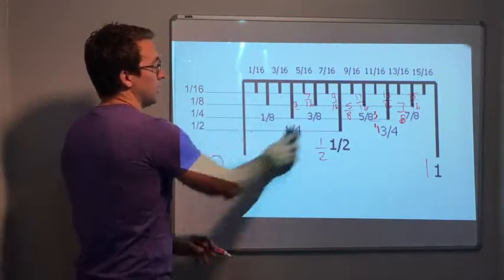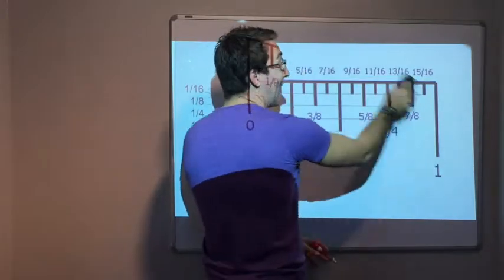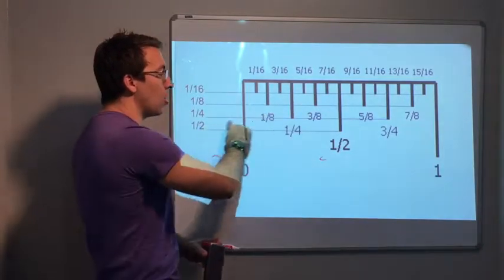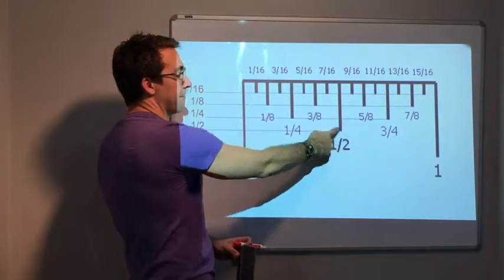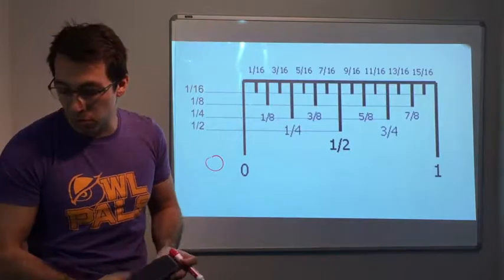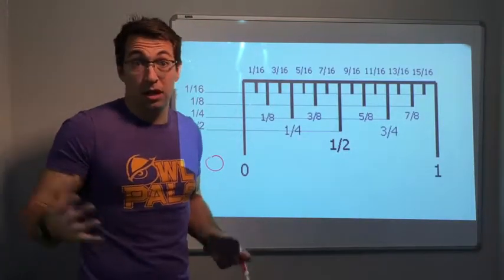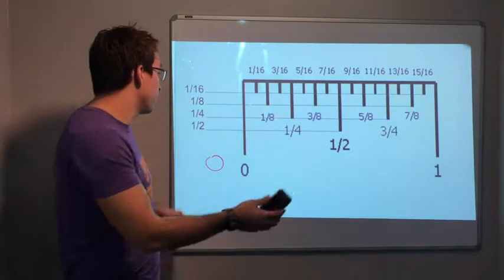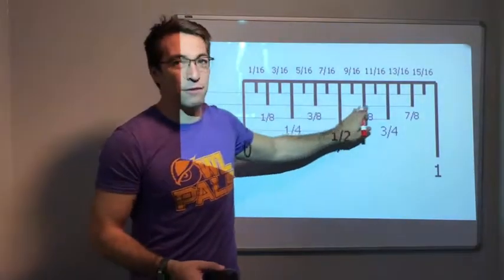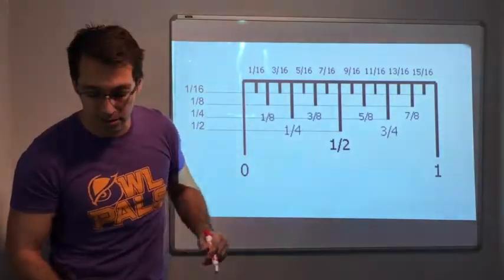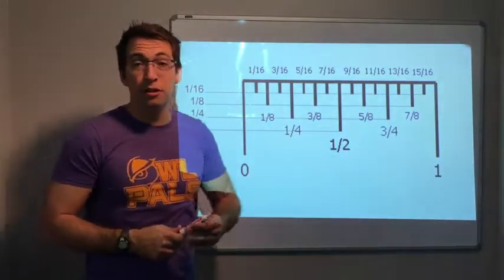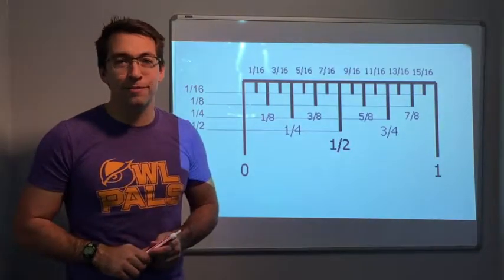Look how cool this is — if you look across the tape measure, the lines are different heights or different lengths. That way you can tell: I'm counting by sixteenths, by eighths, by quarters, or this is one half. A tape measure is a very important life skill you should know how to read. You go from zero all the way to one, passing through sixteen different measurements. This is reading a ruler or a tape measure — hope you guys enjoyed the video!